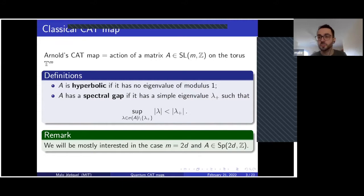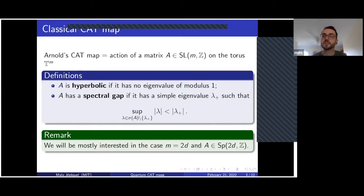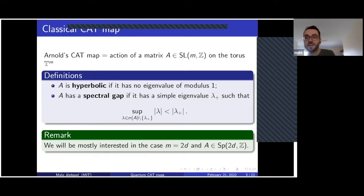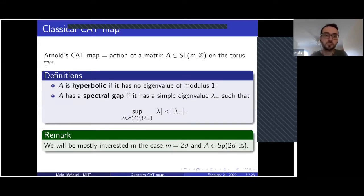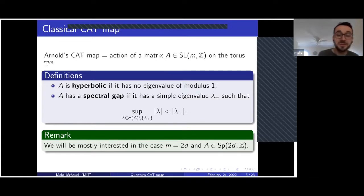For quantum mechanics, we need a symplectic structure. We will assume later that the dimension is even and that the matrix A preserves the classical symplectic form on R^{2d}. I will be very brief about hyperbolic dynamics and tell you just what you need to know about the dynamics of a cat map to understand the proof of our main results. Mainly for pictorial reasons, I will restrict to two dimensions.